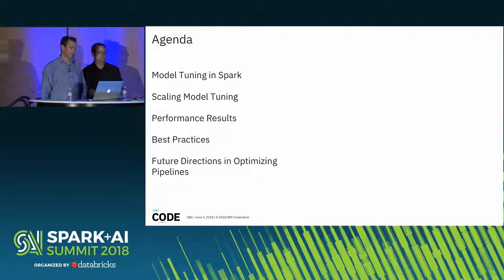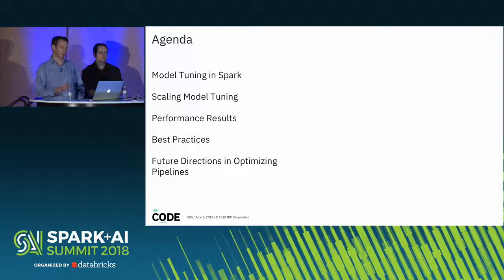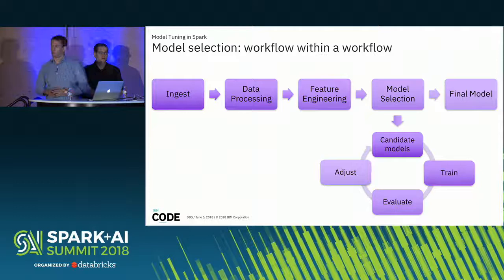Today we'll talk about model tuning and cross-validation in Spark, and what are some of the ways that we can scale that up and make it more performant and efficient, as well as the performance results from that parallelization process. We'll cover some best practices for doing that in your Spark cluster, and then Brian's going to talk about future directions in adding further optimizations to this work.